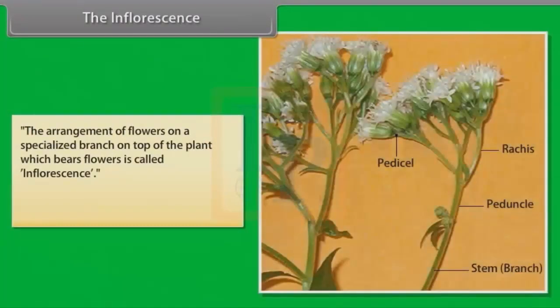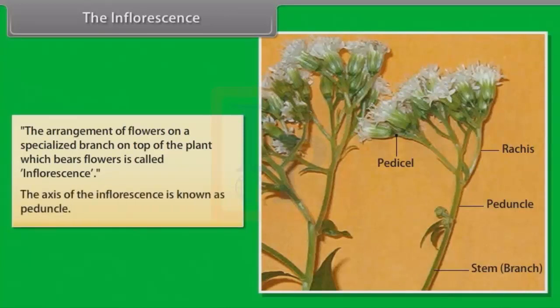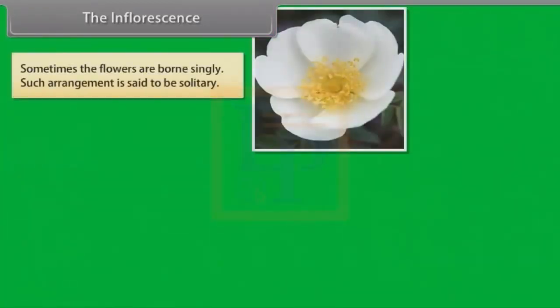The arrangement of flowers on a specialized branch on top of the plant which bears flowers is called inflorescence. The axis of the inflorescence is known as peduncle. Sometimes the flowers are born singly; such arrangement is said to be solitary.